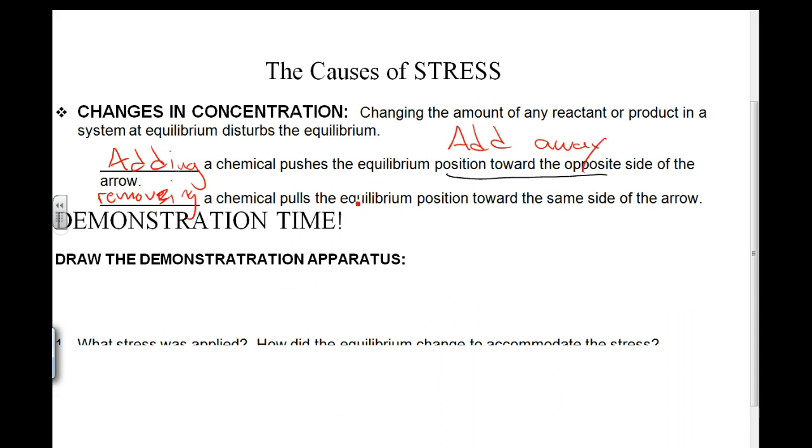Removing a chemical takes or pulls the equilibrium position towards the same side of the arrow. So here's the add away. Then this one has got to be take away. I stay.